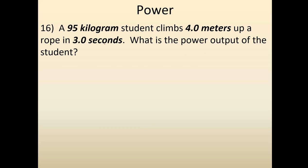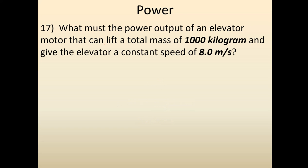Here's the next one — pause and work it yourself. Slightly different this time: they give us the speed. So instead of using FD over T, we're going to use F times v. The force is again found by taking the mass and multiplying by 9.8. Plugging in the speed that they give us, we get the power is a little bit under 80,000 watts.